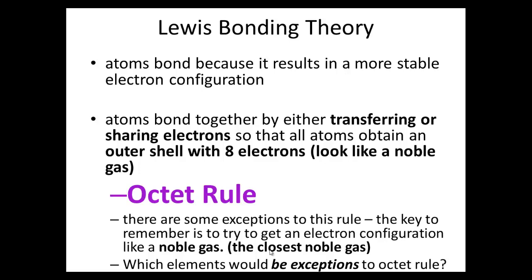Note there are some exceptions to this rule. And the key to remembering is to try to get an electron configuration like a noble gas, the closest noble gas. So, for example, say helium is your closest noble gas. Your exceptions to that would be lithium, beryllium, and hydrogen, and of course, helium. All these will only have two electrons to doublet because they're more likely to try to look like helium since helium is the closest noble gas to them.